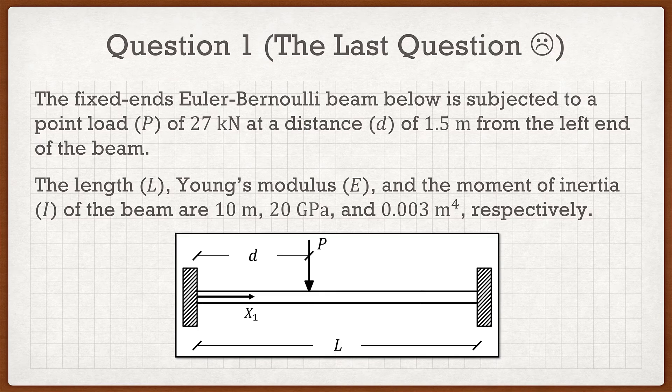The question says the fixed-ends Euler-Bernoulli beam below is subjected to a point load P of 27 kilonewtons at a distance D of 1.5 meters from the left end of the beam. The length L, Young's modulus E, and moment of inertia I of the beam are 10 meters, 20 GPa, and 0.003 meters to the fourth respectively. Being the last assignment, a pictorial representation is provided — a simple beam with both ends fixed and a concentrated point load not at the center.